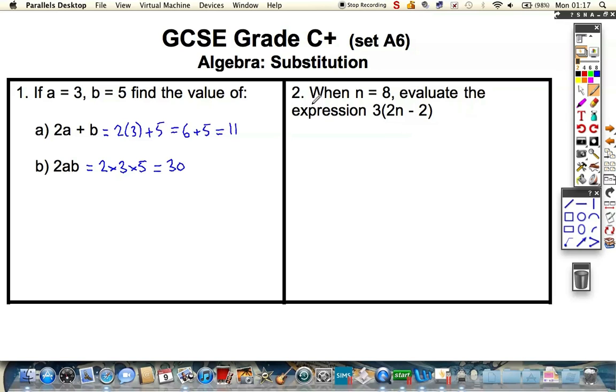Coming to question two, we've now got this expression, 3 brackets 2n minus 2, and we're told this time that n is equal to 8. So, let's evaluate it. We've got 3 multiplied by 2 lots of 8, and then we've got to take away 2.